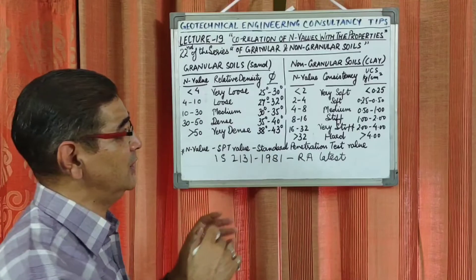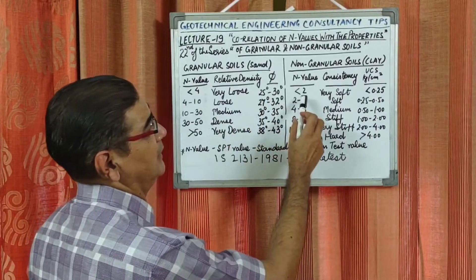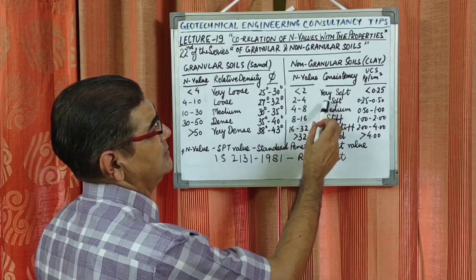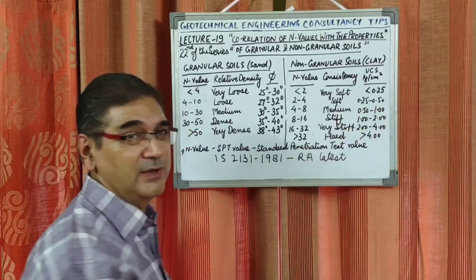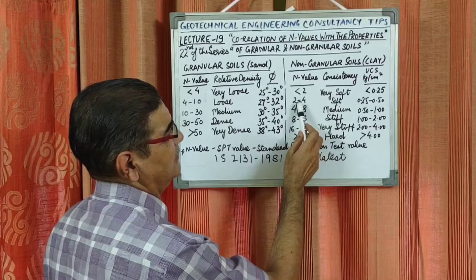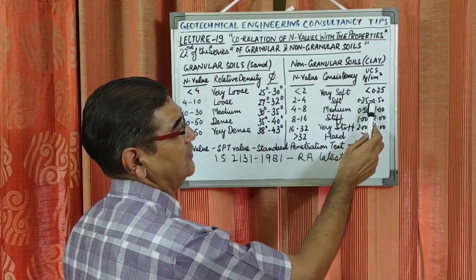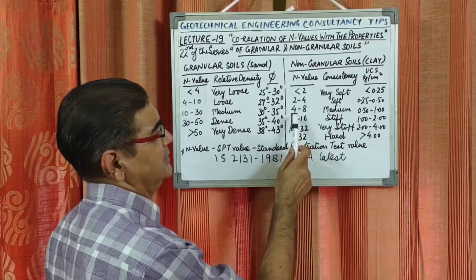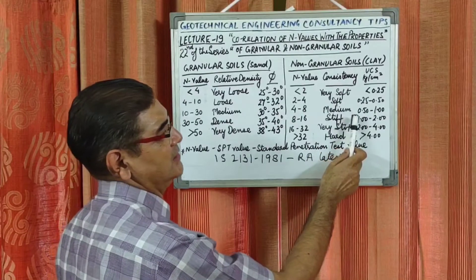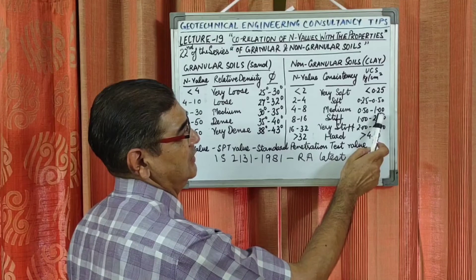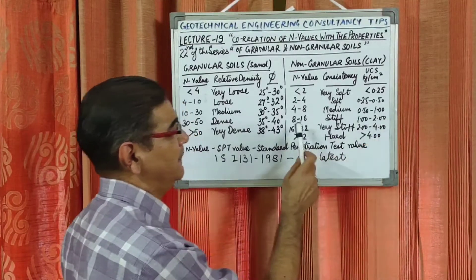Now for the consistency of clay soil: if N is less than 2, it is very soft clay with UCS less than 0.25 kg/cm²; N between 2 to 4 is soft consistency clay with UCS of 0.25–0.50 kg/cm²; N between 4 to 8 is medium consistency clay with UCS of 0.50–1.0 kg/cm².